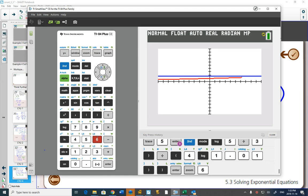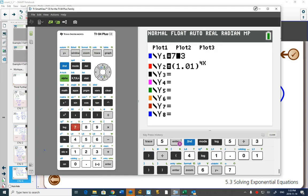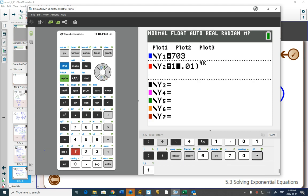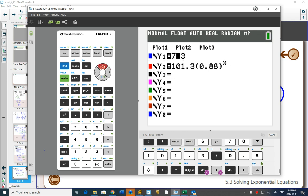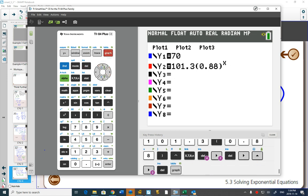So let's say you were on Zoom 6, a regular window. You typed in 70 into Y1, and 101.3 times 0.88 to the X into equation 2. Now if you hit graph, 70, there we go. If you hit graph, does it make sense that you wouldn't see the 70?